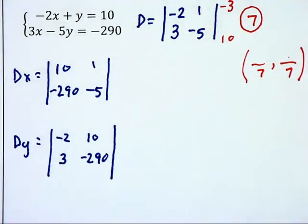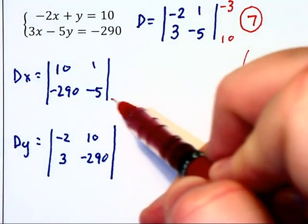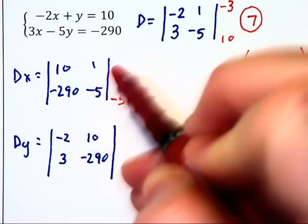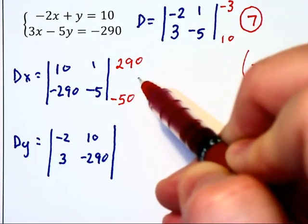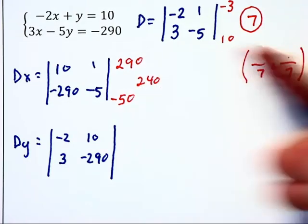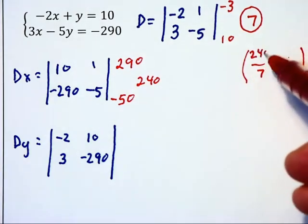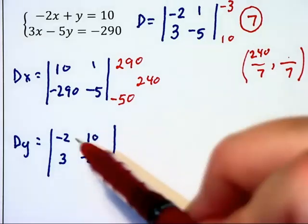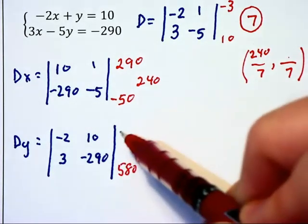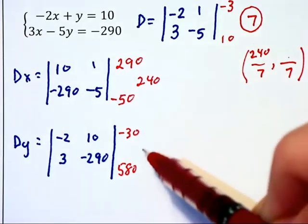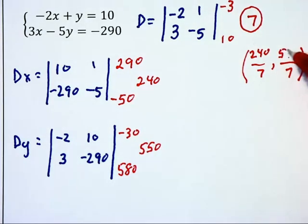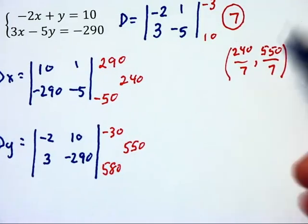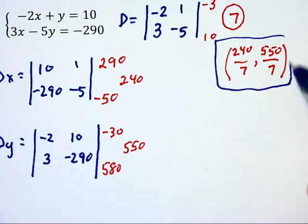but bring the 10 and negative 290 down to the second column. Here we go. Multiplying diagonals, we're going to have negative 50 and positive 290 after the sign change, giving us 240, and the second time we're going to have 580 and minus 30, which will give us 550. So that will be the second numerator. Now these don't reduce, so that right there is our solution set.